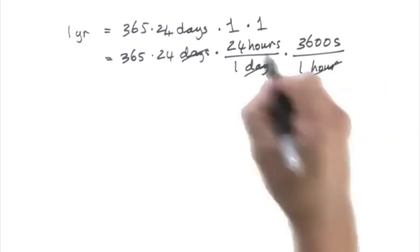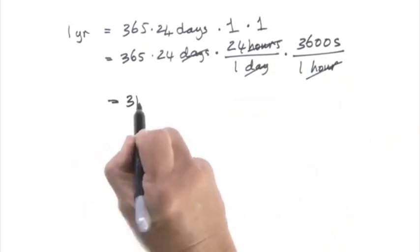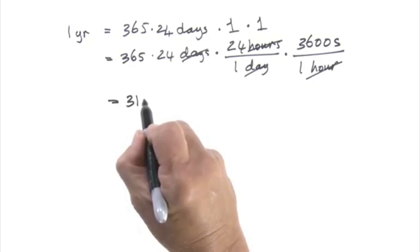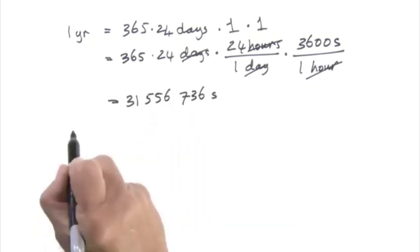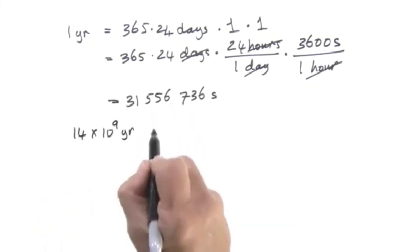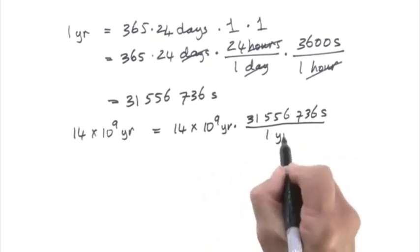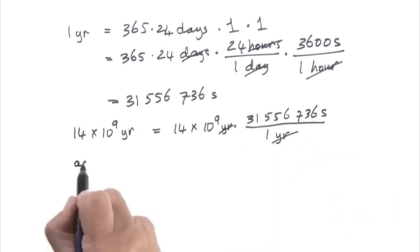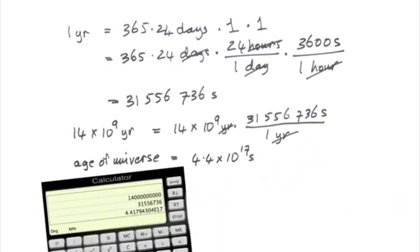Then the calculator tells me the number of seconds in an average year — leap seconds not included. So now I can convert 14 billion years, again multiplying by one. My calculator gave me lots of digits, but I didn't write them all down.